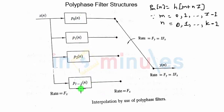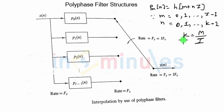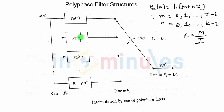What will be the length of each and every filter? That will be equal to capital K. K was nothing but M divided by I. So in our example, M was 4, I was 2, so K was equal to 2. So the length of each and every filter was also 2. If you remember, P0 of n will have h of 0 and h of 2 as its coefficients, and P1 of n had h of 1 and h of 3 as its coefficients.